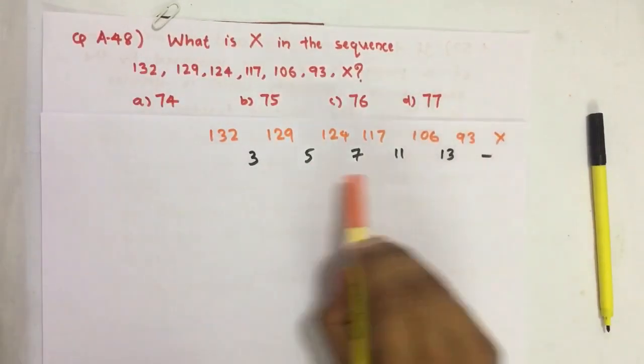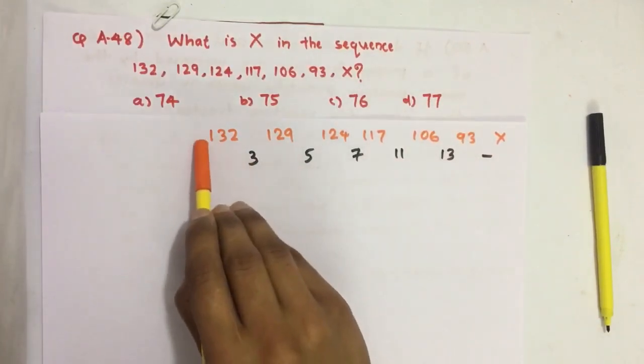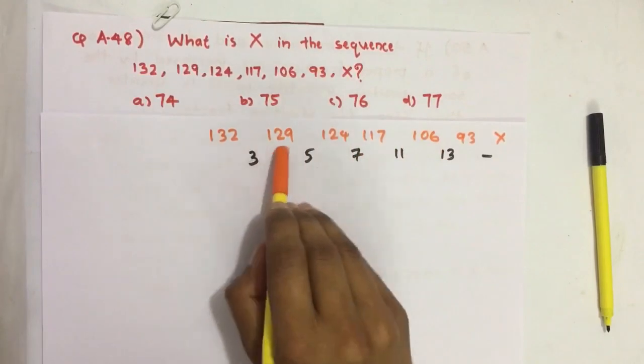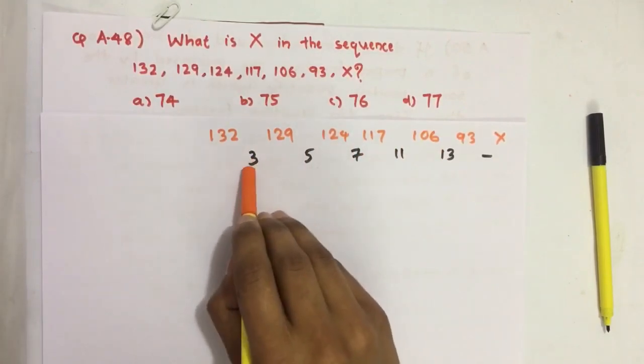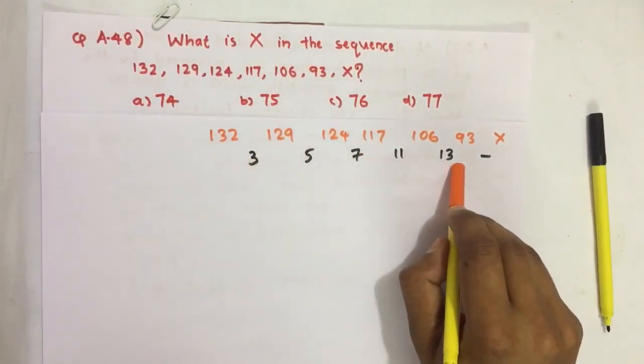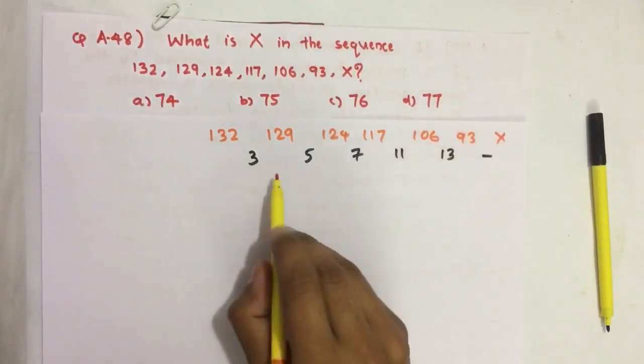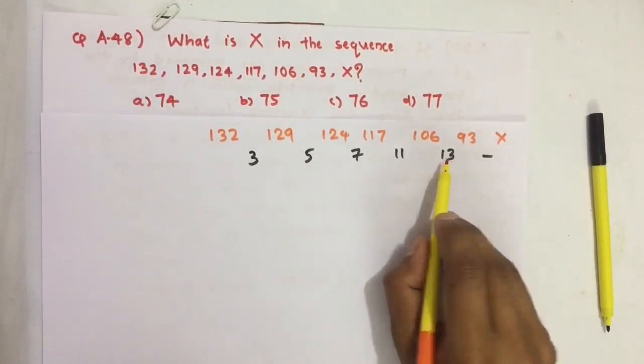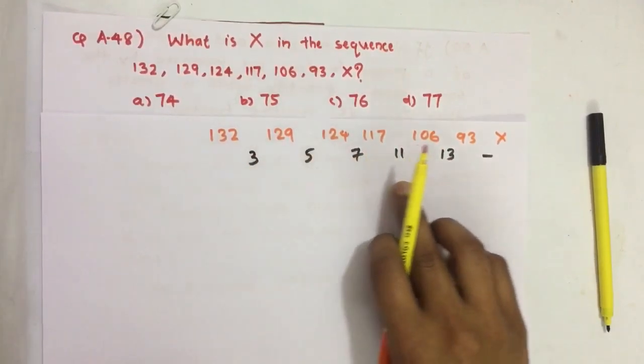So here we get a new sequence from this. It is understood that the given sequence is a decreasing sequence and the decreasing number is also increasing. See this new series: 3, 5, 7, 11, 13. Is there any relation between these numbers?